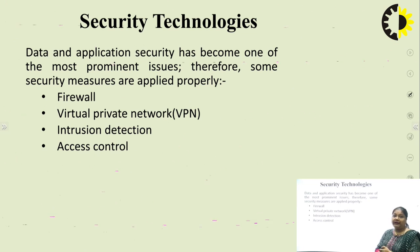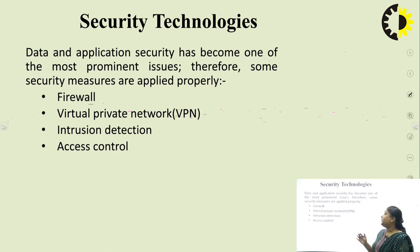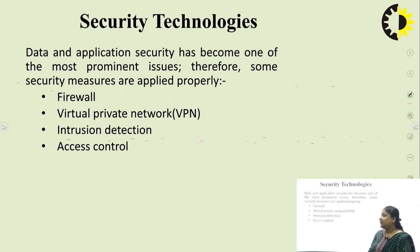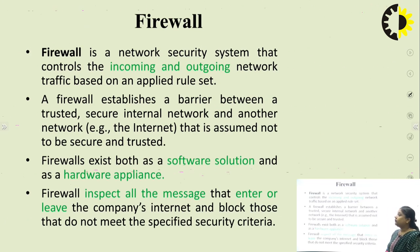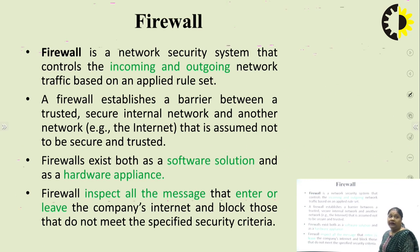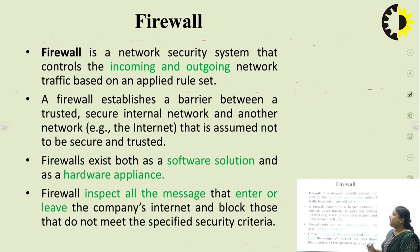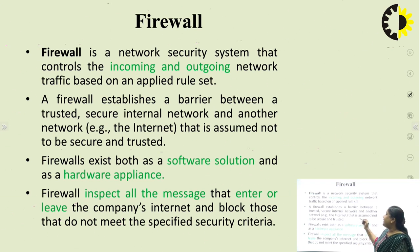Data and application security has become one of the most prominent issues, and for this we have different types of security technologies available — such as firewall, VPN, intrusion detection, and access control. First is the firewall. A firewall is a network security system that controls incoming and outgoing network traffic based on applied rules.